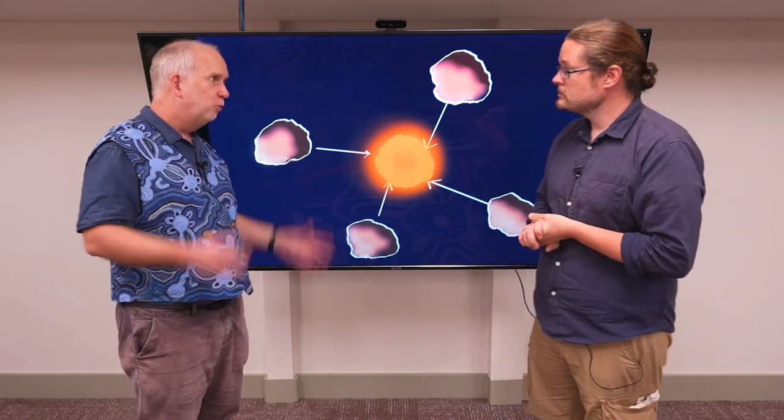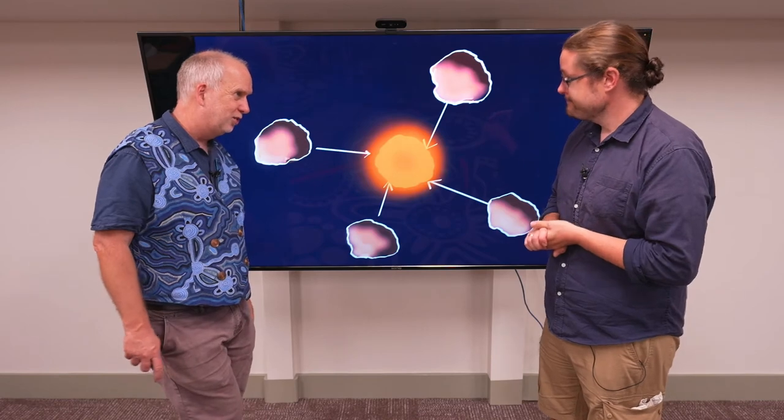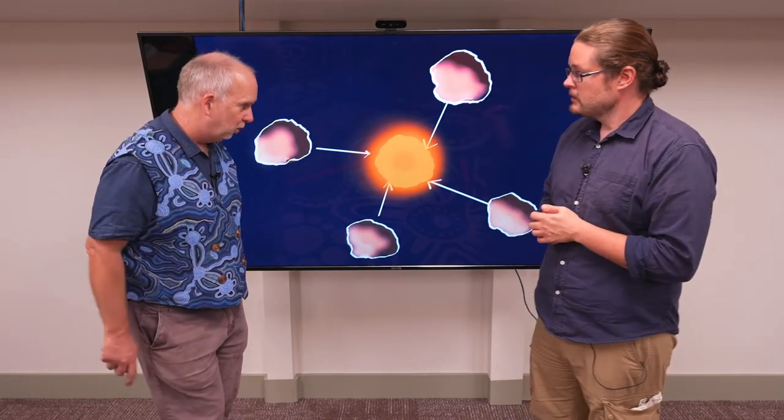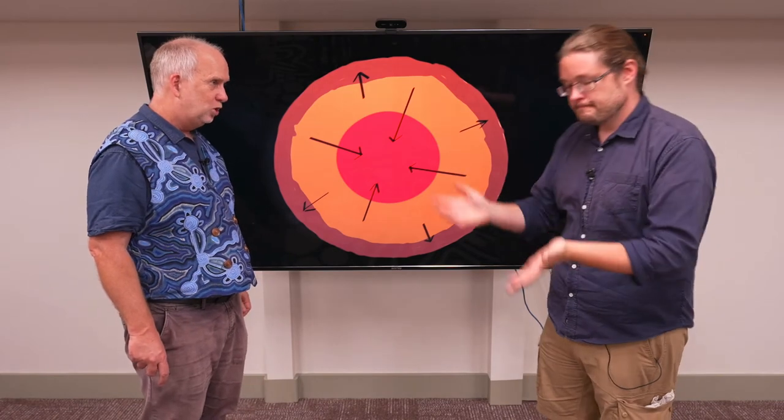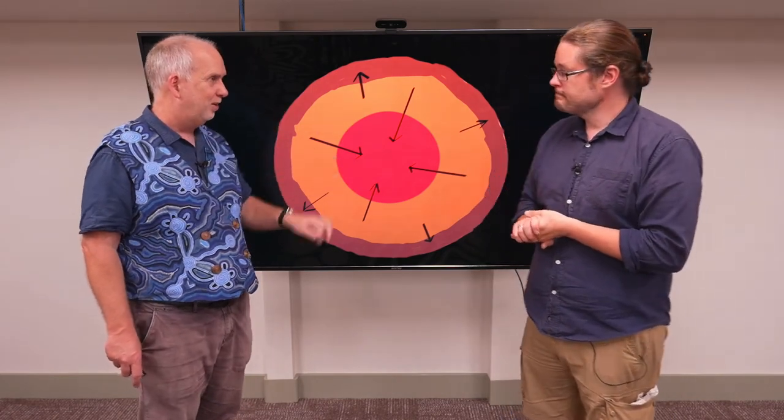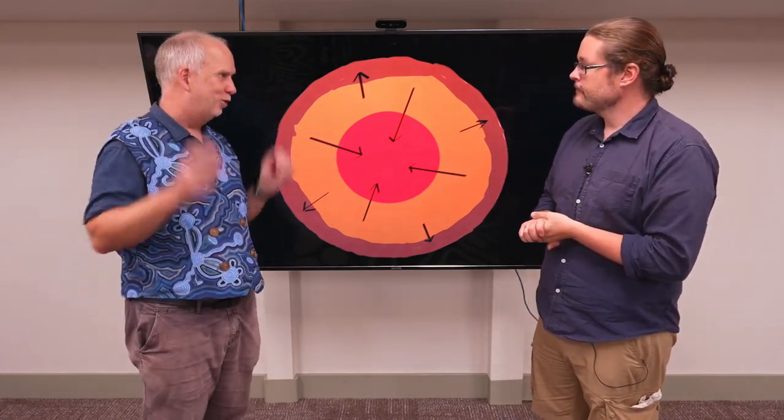This big asteroid, when it formed, would have become quite hot from all the energy of the collisions, plus the radioactive elements in it. As it was hot, it would do the same thing the planets did - the densest elements would sink to the middle, and the lighter elements would float like bubbles to the top.